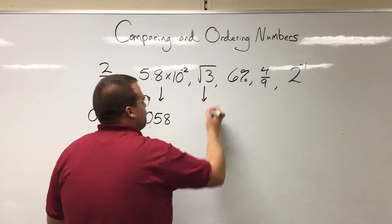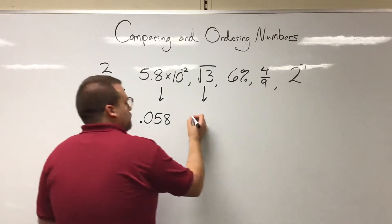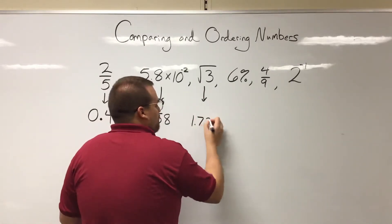The square root of 3. This is one of those that you're just gonna want to plug into your calculator. So that is 1.73.